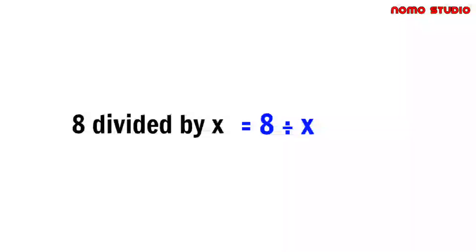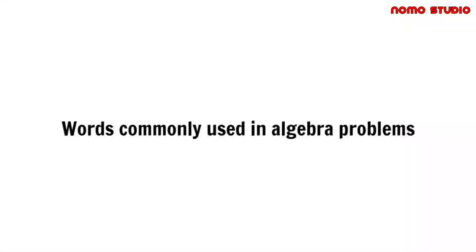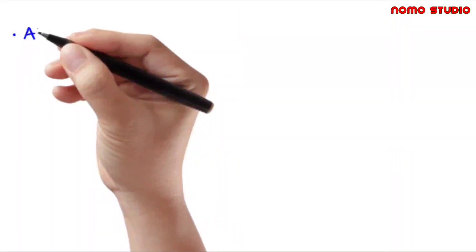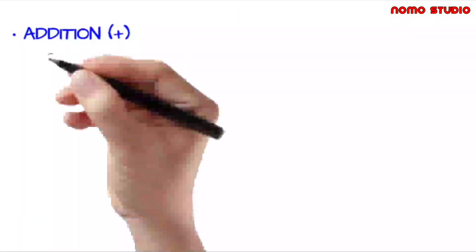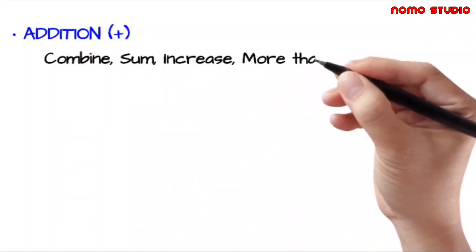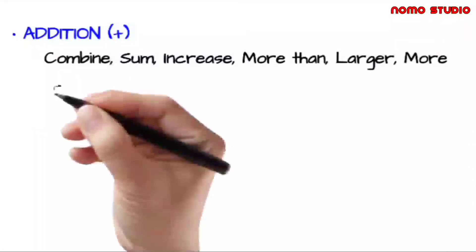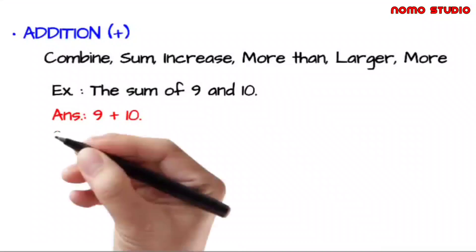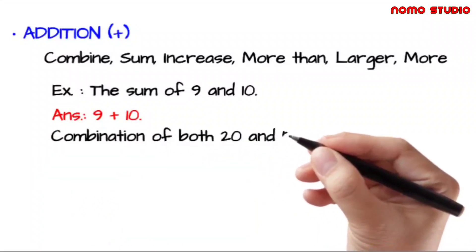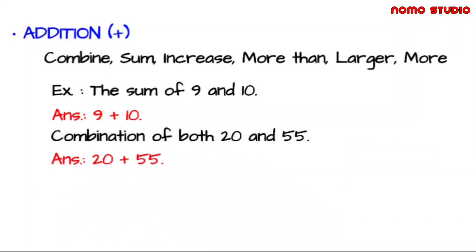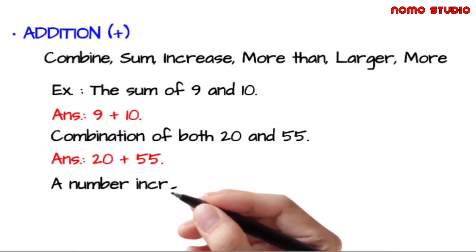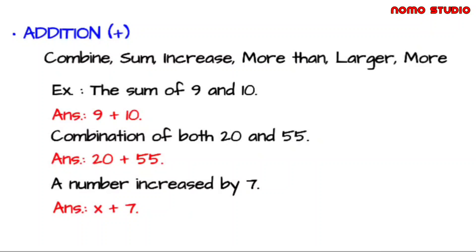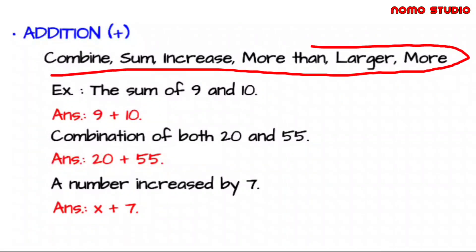For instance, eight divided by x could be written as eight, division symbol, then x. Here are some of the most common math words you'll see in government examinations. For an addition symbol, you'll commonly encounter English terms such as: combine, sum, increase, more than, larger, and more. For example, the sum of nine and ten can simply be written as nine plus ten. Also, combine 20 and 55 means 20 plus 55. A number increased by seven means x plus seven. As long as you encounter these common words, it simply means you need to use addition.